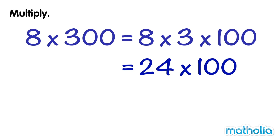24 times 100 equals 24 hundreds, which is equal to 2400. So 8 times 300 equals 2400.